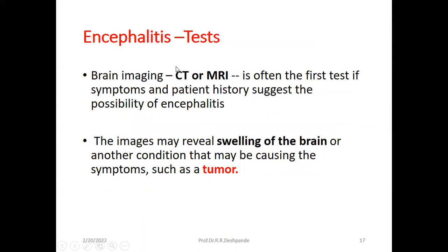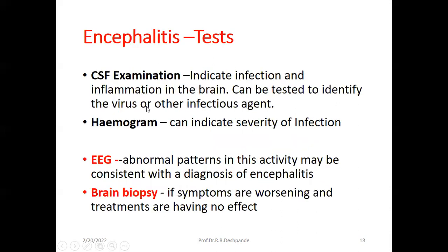To diagnose encephalitis, brain imaging techniques like CT scan or MRI are performed first if symptoms and patient history suggest the possibility of encephalitis. The images can show swelling of the brain or another condition like a tumor, to help make a differential diagnosis. CSF — cerebrospinal fluid — examination indicates infection and inflammation in the brain. If leukocytosis or elevated neutrophils are seen in the blood and CSF, this can help identify the virus or other infectious agent.